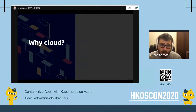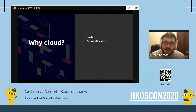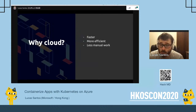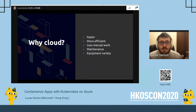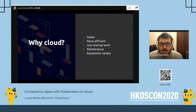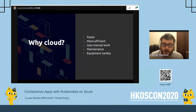Why should we move to the cloud? It's faster and more efficient — you don't have to create everything from scratch every time you need another node. There's less manual work: you can automate all processes because of CLIs and integrations with Azure. You don't need to maintain physical servers. There's more equipment variety too — if you're doing machine learning and need powerful GPUs, Azure has them. You can have node pools from several types of machines and choose which machine a workload runs on.